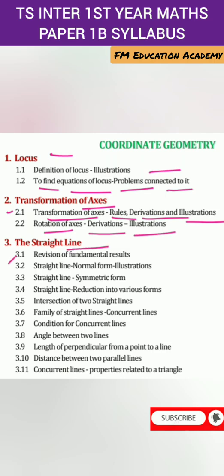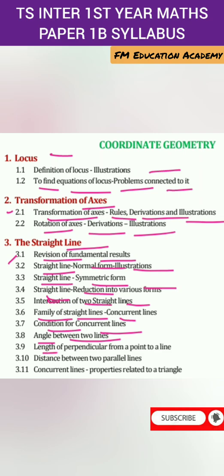Chapter 3 is The Straight Line. Topics include Division of Fundamental Results, Straight Line Normal Form, Illustrations, Straight Line Symmetrical Form, Straight Line Reduction into Various Forms, Intersection of Two Straight Lines, Family of Straight Lines, Concurrent Lines, Condition for Concurrent Lines, Angle between Two Lines, Length of Perpendicular from a Point to a Line, Distance between Two Parallel Lines, and Properties Related to a Triangle.